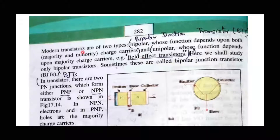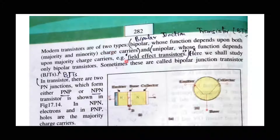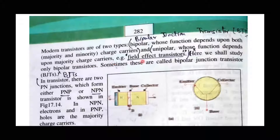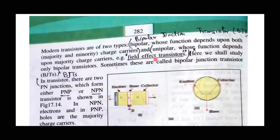Field effect transistors only make use of the majority charge carriers. Bipolar junction transistors use both charge carriers, but field effect transistors are unipolar — only a single type of charge carrier is used, the majority charge carriers. That is why they are called field effect transistors.